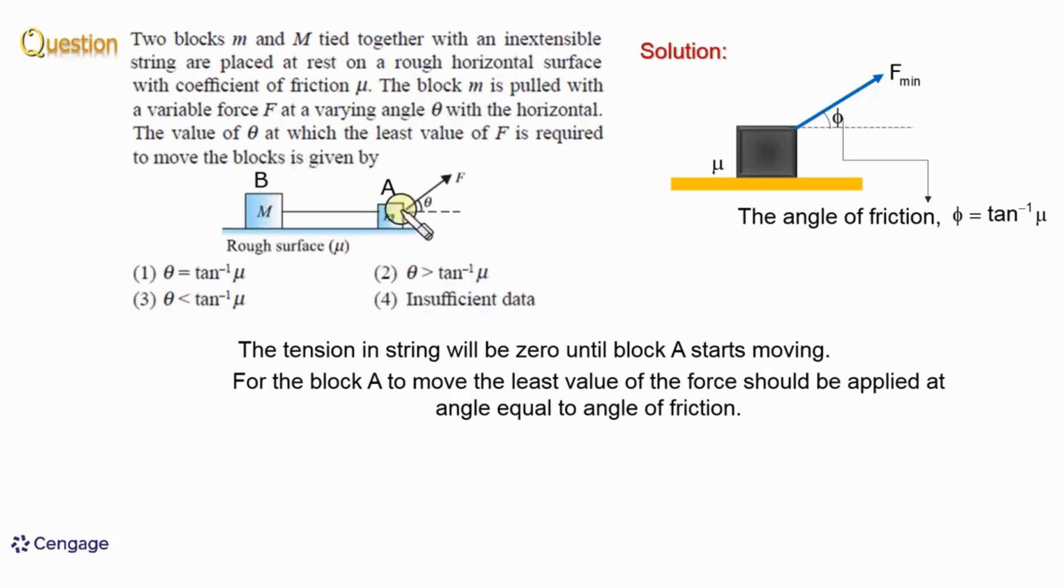That means we can take blocks A and B as a system. The force F is acting on the system at angle θ. This angle θ, as we discussed, should equal the angle of friction. Therefore, θ equals tan⁻¹μ, meaning option one is the correct option.